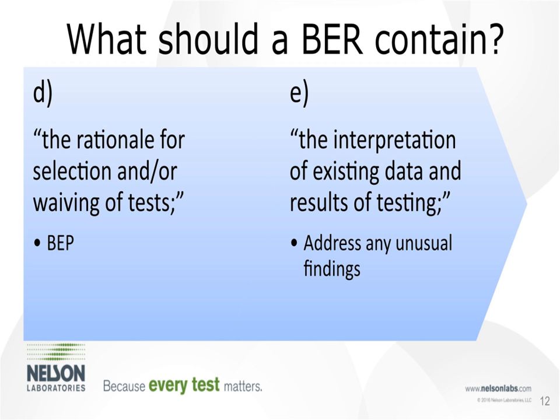Part D covers the rationale for selection and/or weighting of tests. This references back to the biological evaluation plan and is determined by the device categorization based on contact type and duration, as well as any parallel standards identified that need to be followed for the type of device and patient contact.